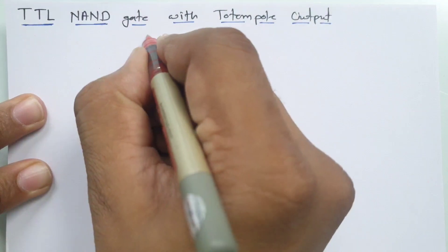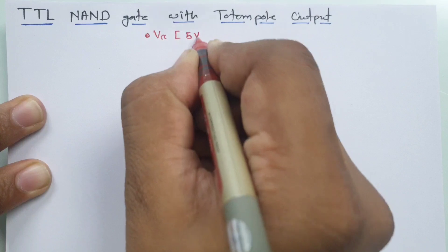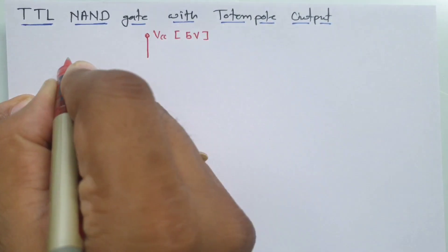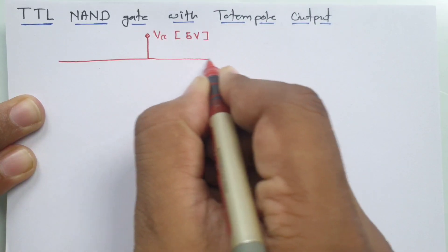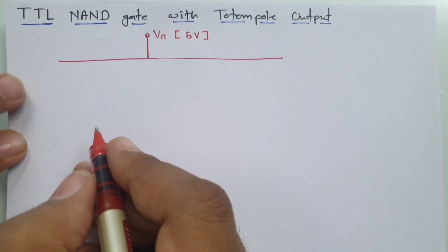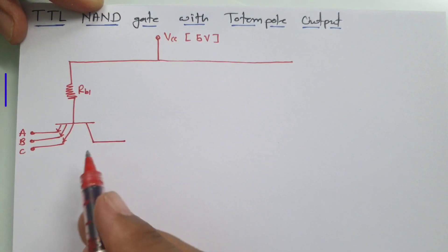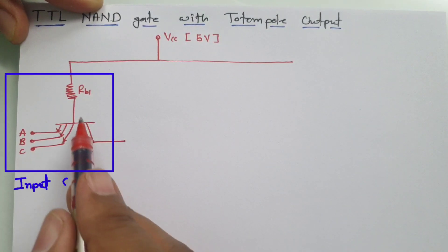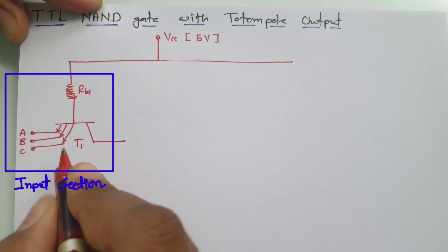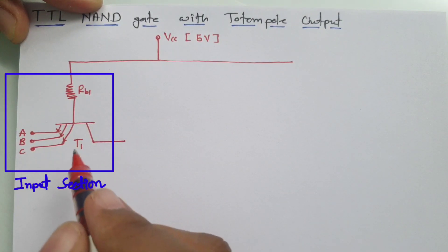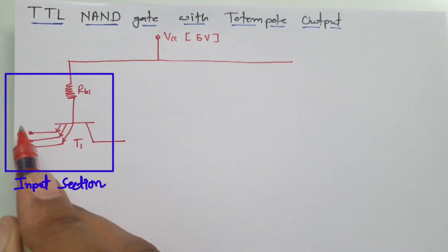We have a VCC supply, and usually we keep VCC at 5 volts. This TTL NAND gate circuit is configured in three sections. The first section is the input section. In the input section, we have a common base configuration of transistor T1, and RB1 is a biasing resistance. We give inputs at terminals A, B, and C.